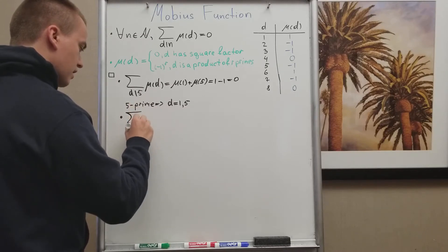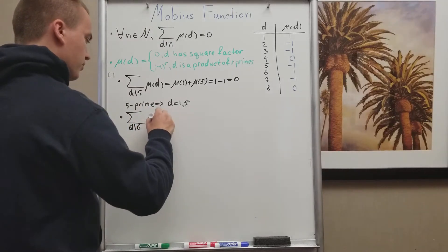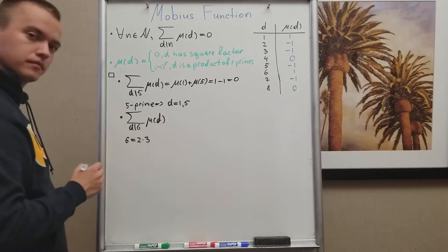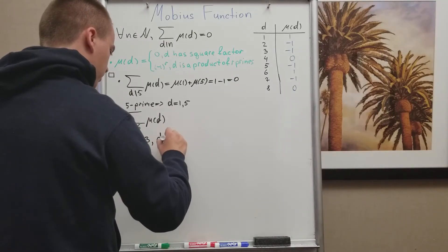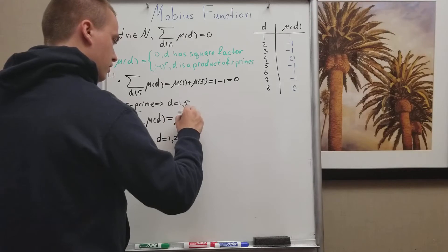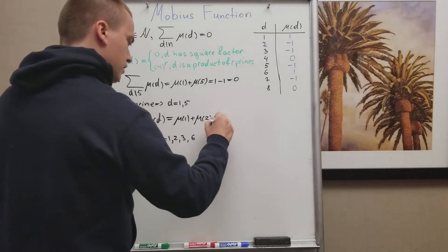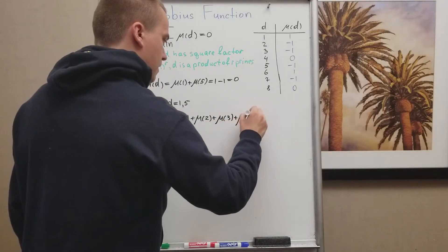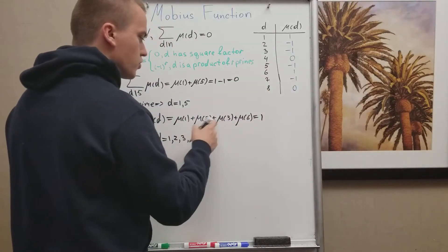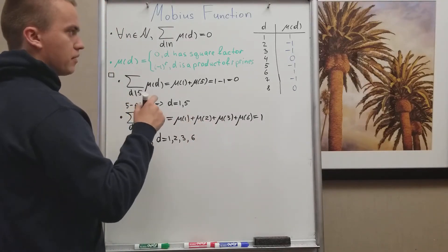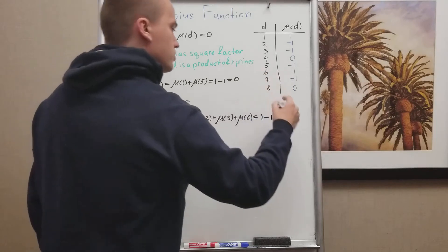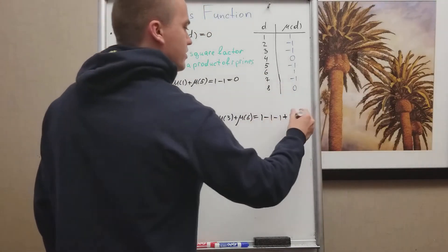Let's take n = 6, which is not a prime. Since 6 is a product of two primes 2 and 3, the possible divisors are 1, 2, 3, and 6. So the sum is μ(1) + μ(2) + μ(3) + μ(6). Using a table: μ(1) = 1; μ(2) and μ(3) are prime, so each equals -1; and μ(6), a product of two primes, equals 1. So we get 1 - 1 - 1 + 1 = 0.